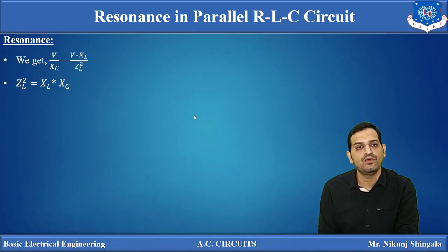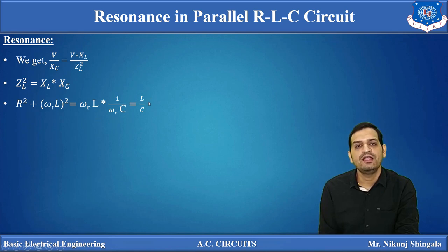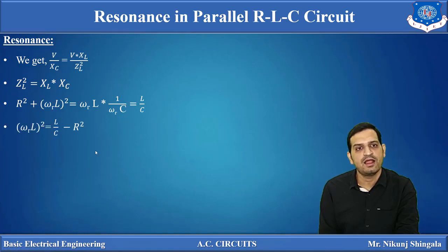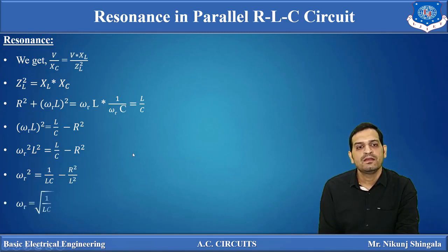We know XL and XC can be represented in terms of ω, and ZL = √(R² + ωL²). So ZL² at resonance can be represented as R² + (ωRL)² = ωRL · (1 / ωRC). If ωR cancels out, we get L / C. So we can write (ωRL)² = L/C − R², taking R² to the right-hand side. Therefore ω²L² = L/C − R², giving ωR² = 1/(LC) − R²/L².